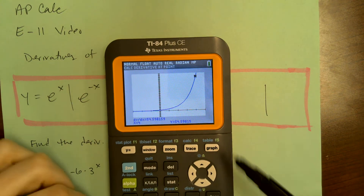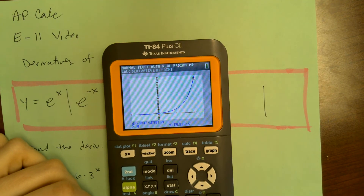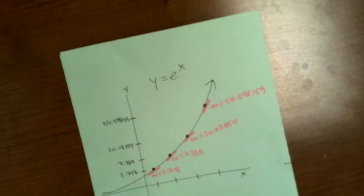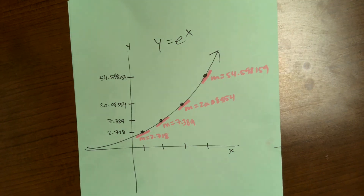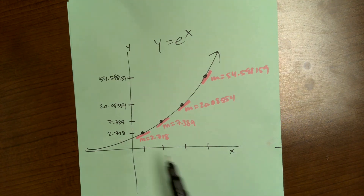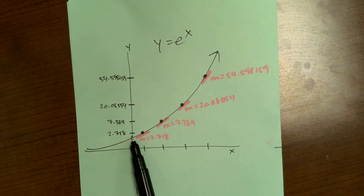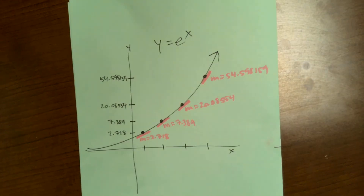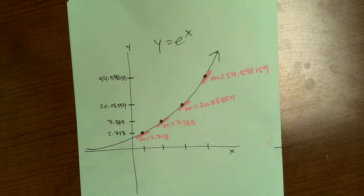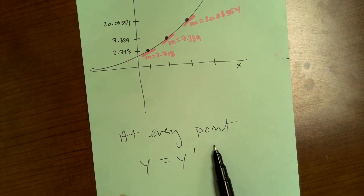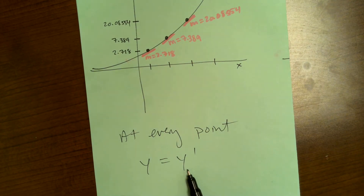Let's do x equals 4 — once again, the derivative is the same as the y coordinate. So the slope of the tangent line at these points is always the same as the y coordinate of that point. This is a very special case that only happens for e to the x. At every point, y is equal to y prime.